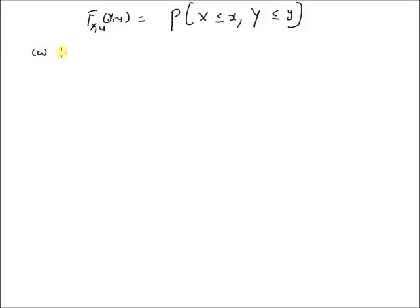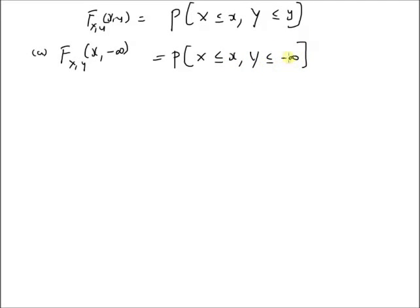The first case we want to look into is F(x,y) of x comma minus infinity, that is, y equal to minus infinity. By definition, this should be equal to the probability that X is less than or equal to small x and Y is less than or equal to minus infinity, which basically means that Y cannot take any values on the real line. This event is basically an empty set, and the probability of an empty set is zero. Therefore, the extreme value of the CDF function at x comma minus infinity is zero.